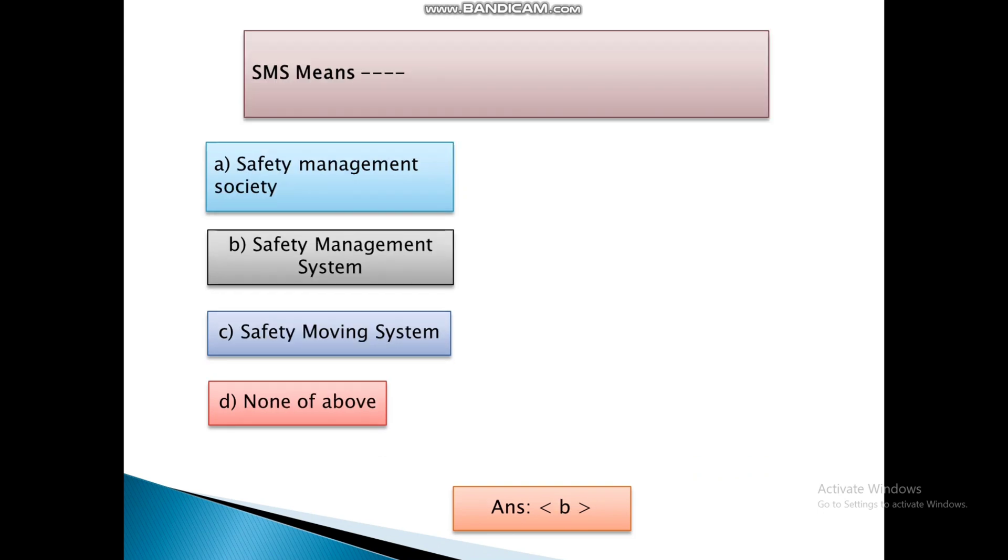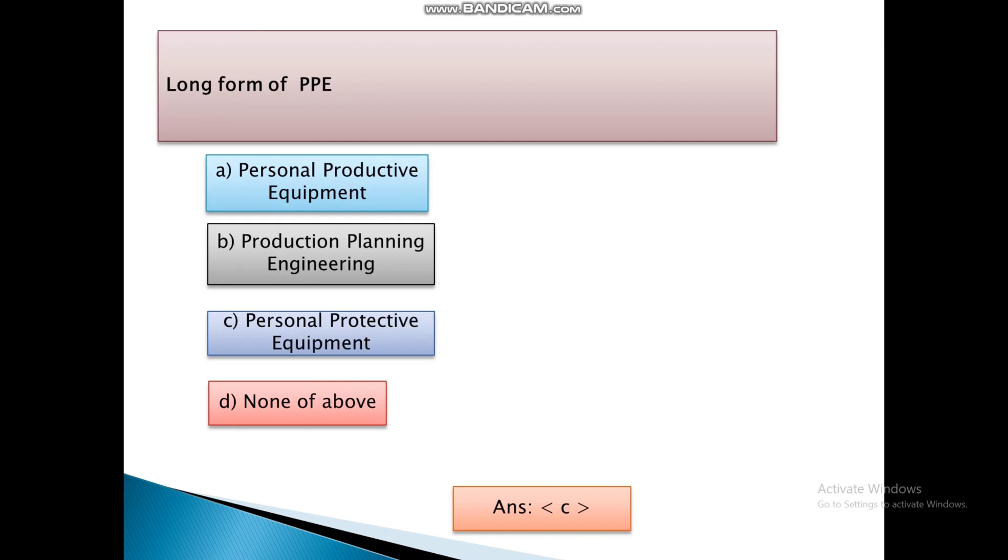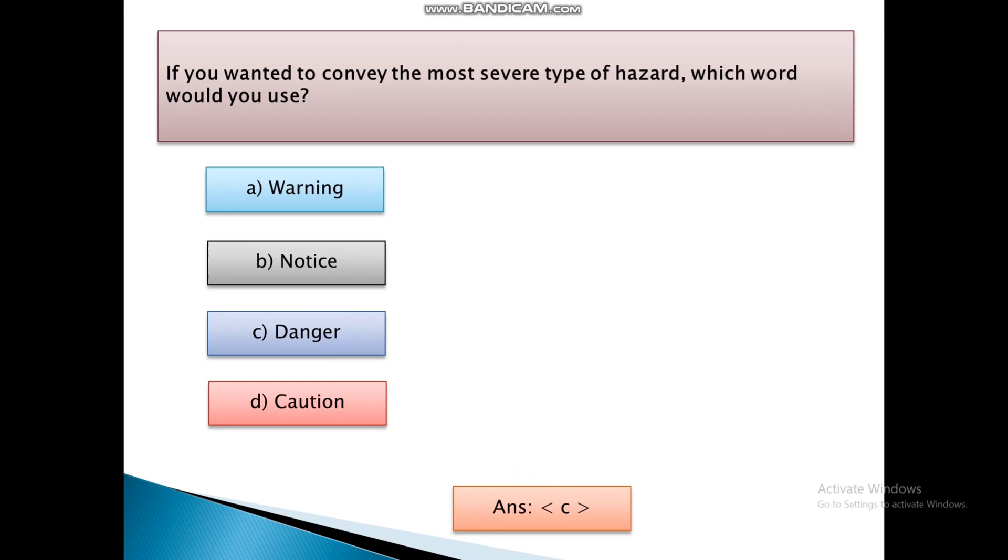SMS means: First, Safety management society. Second, Safety management system. Third, Safety moving system. And Fourth is none. And the answer is B, that is SMS means safety management system. Long form of PPE is: First, Personal Productive Equipment. Second, Production Planning Engineering. Third, Personal Protective Equipment. And Fourth is none. And the answer is C, that is personal protective equipment.